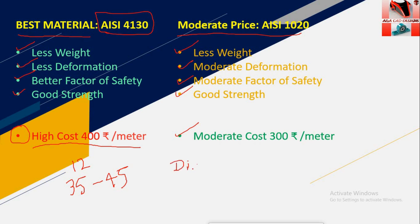One thing I should mention: the diameter of the cross-section of the frame matters. If you increase the thickness of the pipe, you are adding more material, so weight will increase, but it will also increase the strength of the frame and the factor of safety. So you have to deal with diameter and thickness wisely.